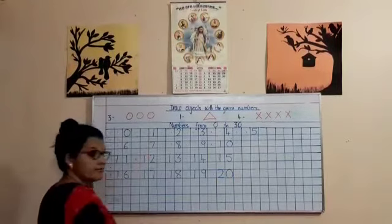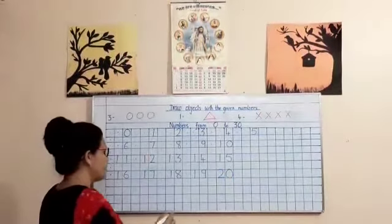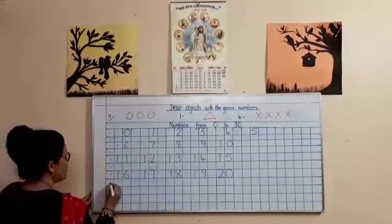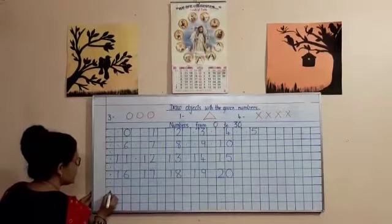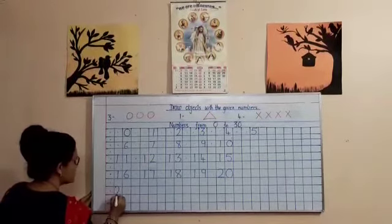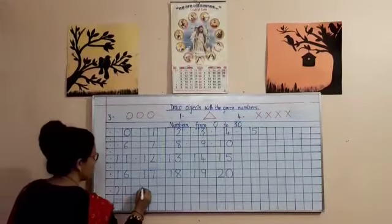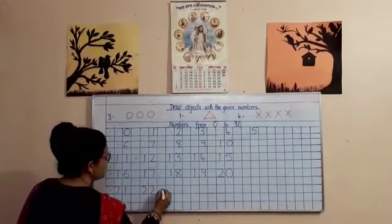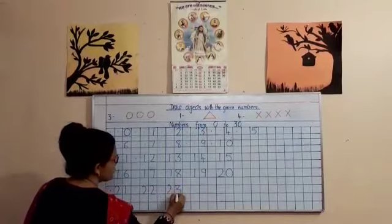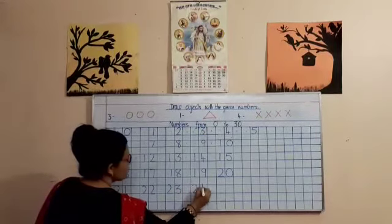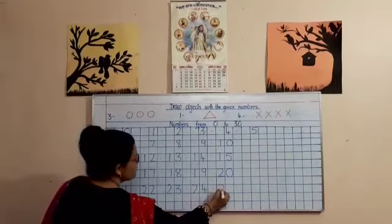So what comes after 20 children? Yes, very good, 21. You put a dot below this and come to the next line, again put a dot and then write 21, dot, 22, 23, dot, 24, dot, 25.